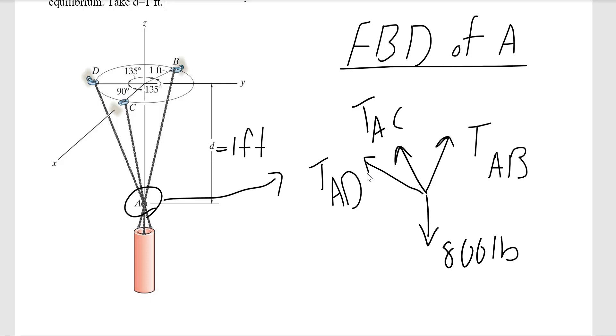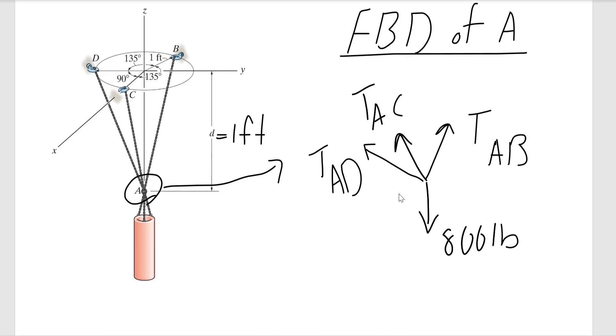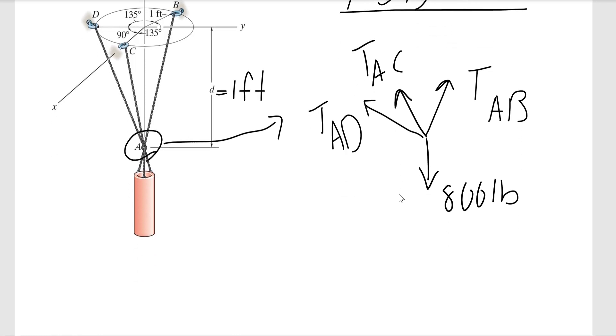So our first task is to convert these forces into Cartesian form, and to do so we are going to use unit vectors. Because I don't have the direct angle to each axis, only have the dimensions, I need to find the unit vector and multiply my forces by unit vector to get the Cartesian form.